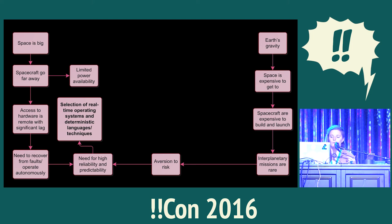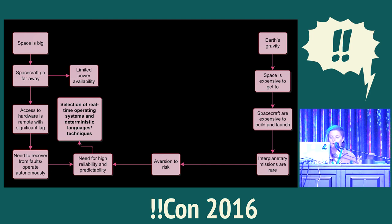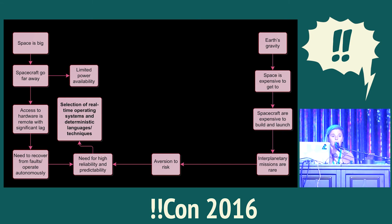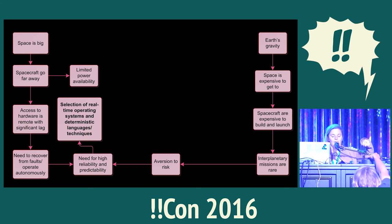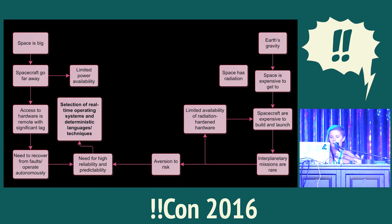Moving on to hardware: if you are a spacecraft, you probably don't have a lot of electrical power to work with. If you're far from the sun, you need to use non-solar power, and plutonium-238 is in a bit of short supply at the moment. If you're on or orbiting a planet, you have nights — you're in the shadow of the planet. So, limited power.